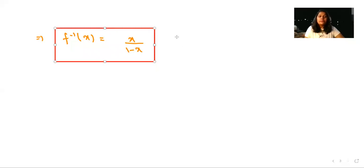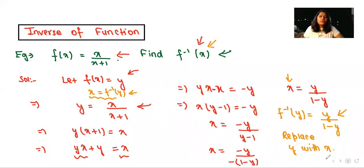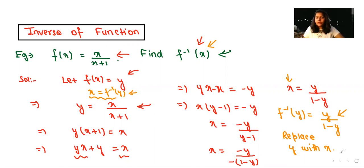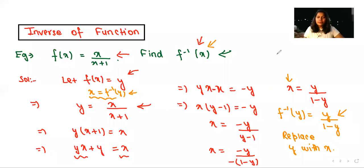This is how we find the inverse of a function and solve composition of a function. One thing to note: here the function is already one-one and onto, so I found the inverse directly. But every time you do a question, you have to check whether a function is one-one and onto or not, because a function is invertible if and only if it is both one-one and onto. I hope you have understood this explanation. Thank you so much.